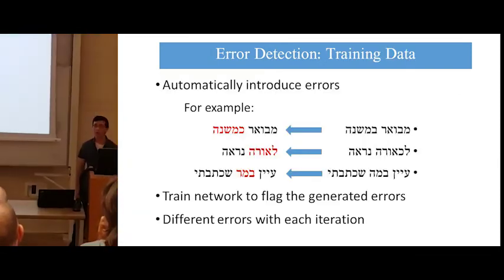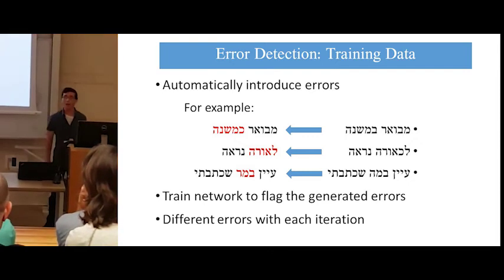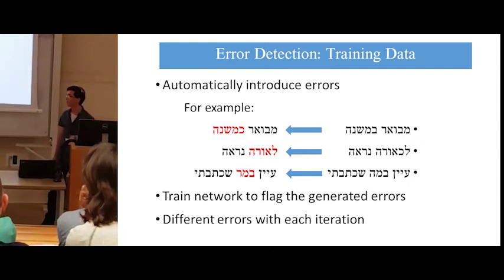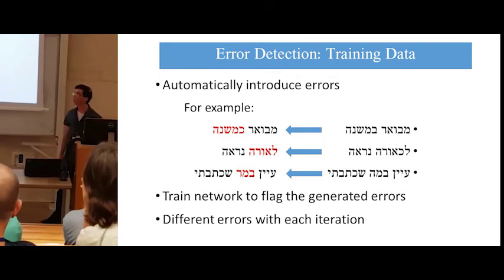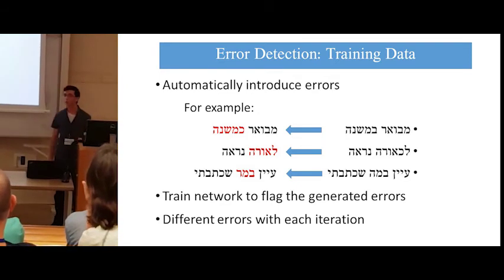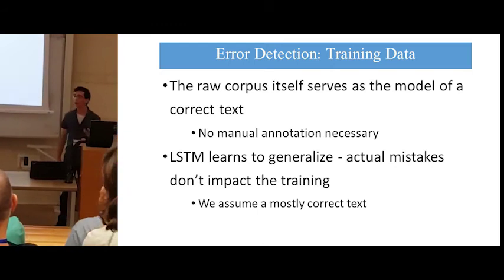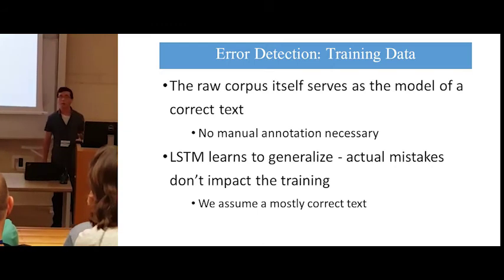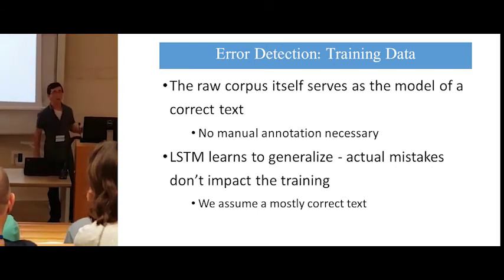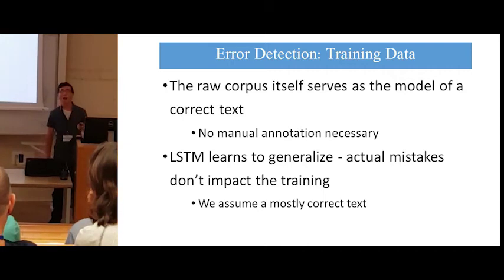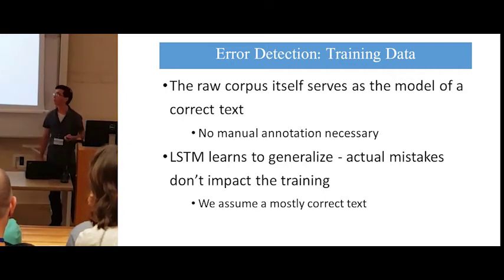During training, we automatically introduce errors, and we train the network to flag these automatically generated errors. With every iteration, we generate a new set of errors so the network doesn't overfit to specific words. Our corpus that we are trying to detect errors in is also the corpus we use for training. We assume the text is mostly correct, and the model generalizes so that actual mistakes don't impact the training.